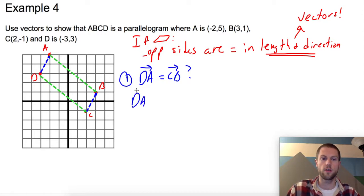So DA, vector DA is going to be given as, I'm going to take my A values and subtract them from my D. So I'm going to take -2 minus -3, and I'm going to take 5 minus 3. And that comes out to be (1, 2). Those are my components.